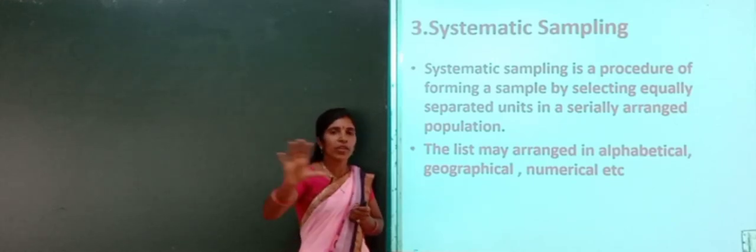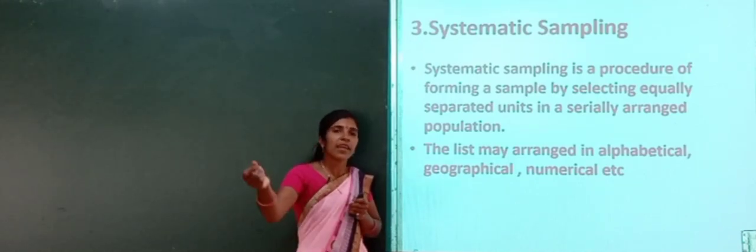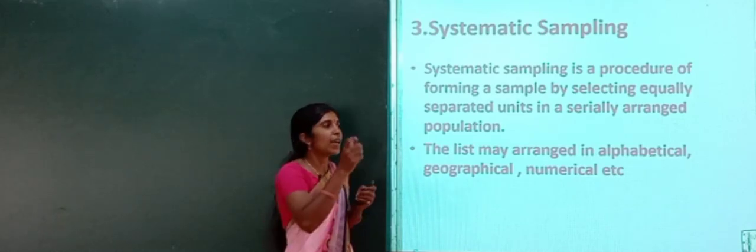For example, say you have serial numbers 1 to 100. You randomly select a starting number, say 6, and take a sample size of 10. So you select 6, then 6 plus 10 equals 16, then 26, then 36, and so on. That is how systematic sampling works — you systematically select units at equal intervals.